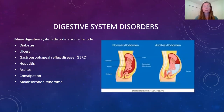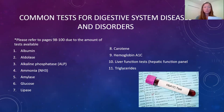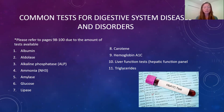Some common disorders or diseases of the digestive system include diabetes, ulcers, hepatitis, and gastroesophageal reflux disease or GERD. Many tests for the GI system are on table 5-6 in your textbook, spanning pages 98 to 100. These tests help diagnose things such as chronic liver disease, pancreatic disorders, type 2 diabetes, colon cancer, and other bacterial infections.